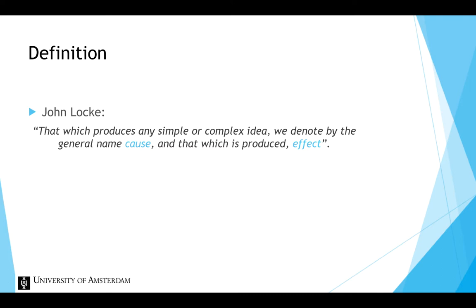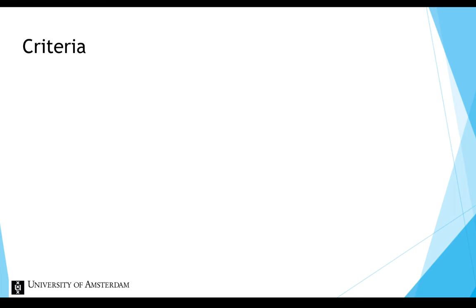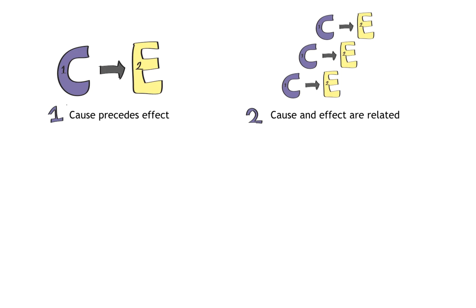The 19th century philosopher John Stuart Mill formalized three essential ingredients of a causal relationship. A causal relationship exists if: The cause precedes the effect. The cause is related to the effect. This means that the cause and effect go together, or covary.